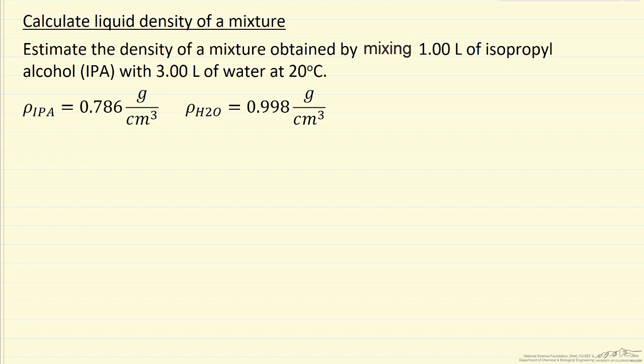Here we're going to estimate the density of a mixture obtained by mixing one liter of isopropyl alcohol with three liters of water. We're going to do this at 20 degrees C, and I'm giving here the densities of these two species at 20 degrees C.